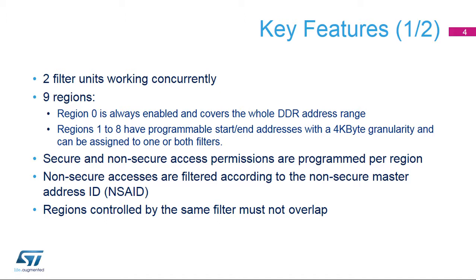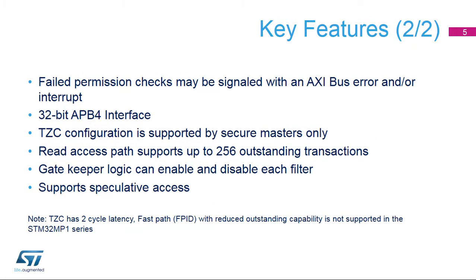Secure and non-secure access permissions are defined per region. Non-secure accesses are filtered according to the non-secure master address ID. Regions controlled by the same filter must not overlap. Failed permission checks can be signaled either with an AXI bus error, with interrupt, or both.